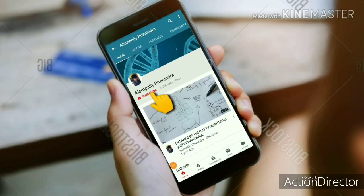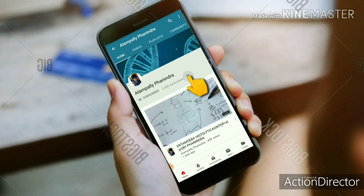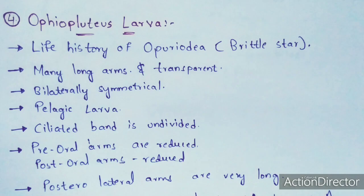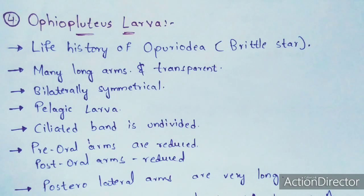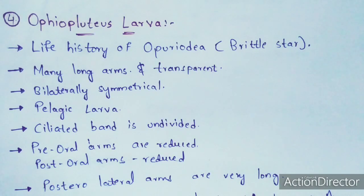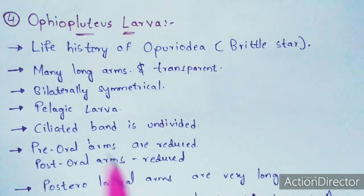Hi friends, if you like my videos subscribe to my channel and press the bell icon for the latest updates. In the previous part one video I explained up to the auricularia larva. This video is based on the forms of echinodermata larva. If you didn't see part one, the link will be given in the description box — watch that first, then come to this video.